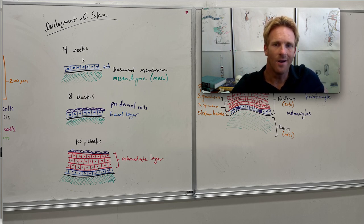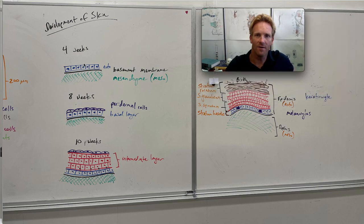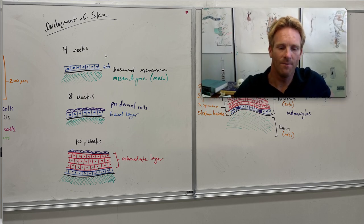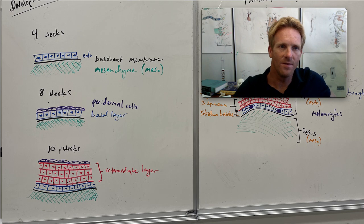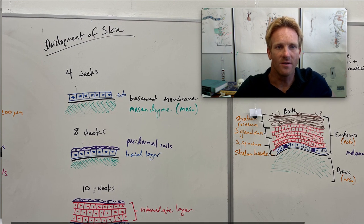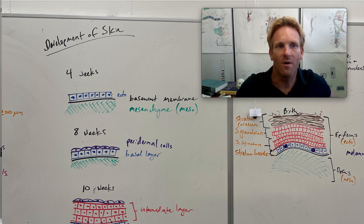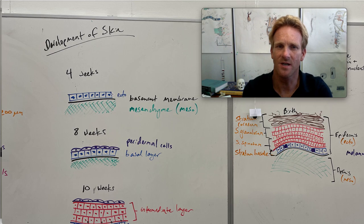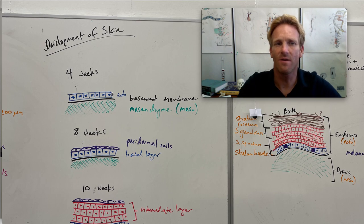So we're talking about the development of the skin and we're really going to begin around four weeks after fertilization. If we look at the skin four weeks after fertilization, this blue layer represents the ectoderm. Obviously the outer layer of the skin, which is the epidermis, is going to develop from ectoderm, whereas the deeper layer of the skin, which is called the dermis, that's going to develop from mesoderm.